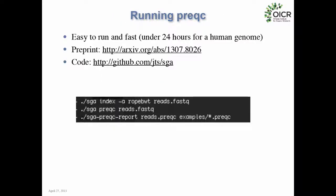Here's how to run preQC: it's just four commands — build an index of the reads, run the sampling procedure, then run a Python script that generates the report and all the plots I just showed. It's relatively fast; you can run it on a human genome in about 24 hours. There's a paper describing this on arXiv.